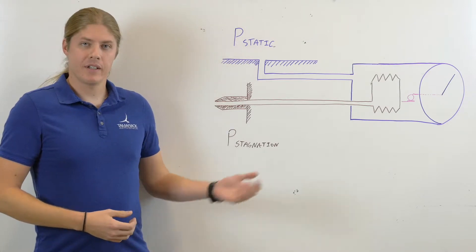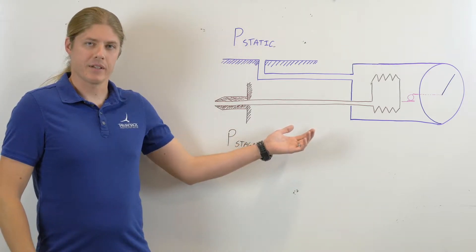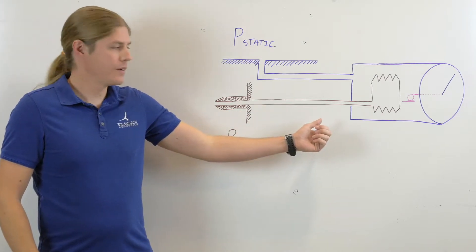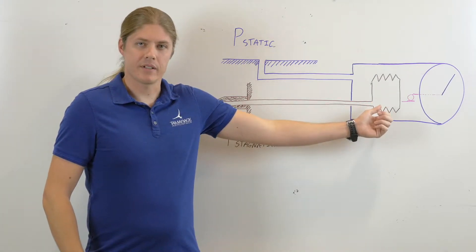Most of the airplanes flying today use a more robust mechanical system like this. In the system, air enters the pitot tube here and flows into a bellows inside the airspeed indicator.